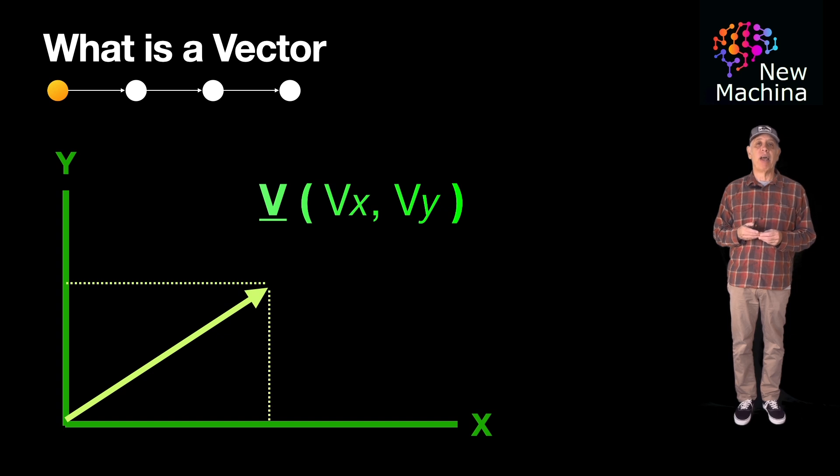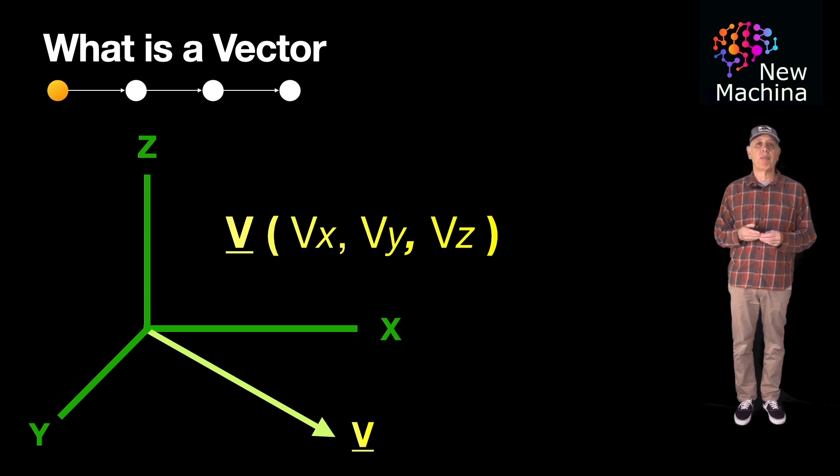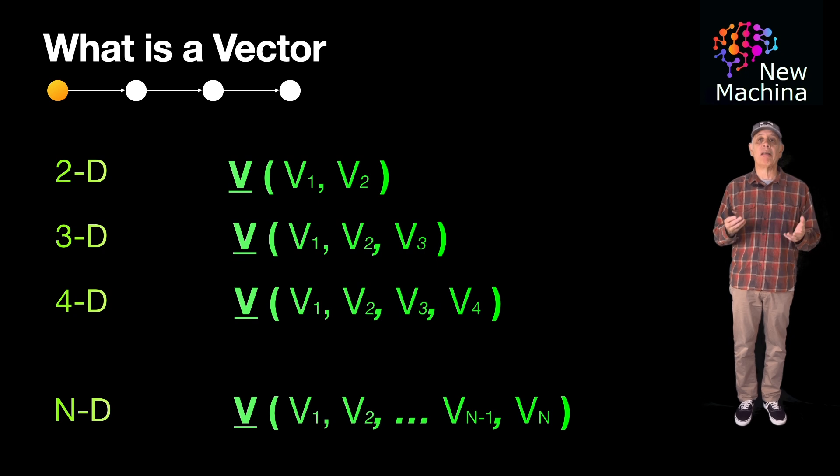Here's a simple example of a vector in two dimensional space. In addition to two dimensions there are also three dimensional vectors. Here's an example vector in three dimensional space. There is an X, Y, and Z component for this 3D vector. Here I show the vector notation for two, three, four, and n dimensions.